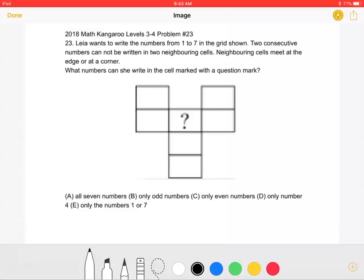What numbers can she write in the cell marked with a question mark? A. All seven numbers. B. Only odd numbers. C. Only even numbers. D. Only the number 4. Or E. Only the numbers 1 or 7.